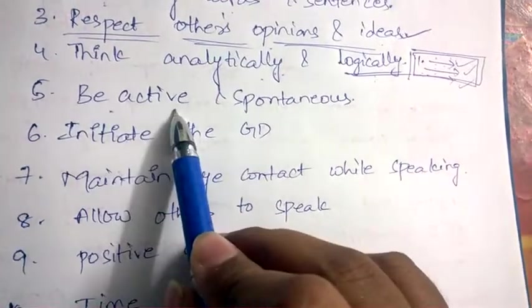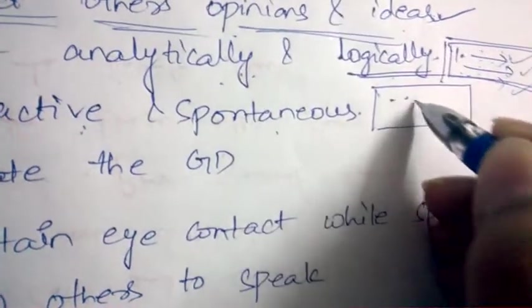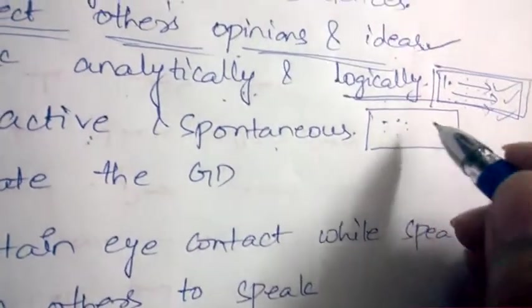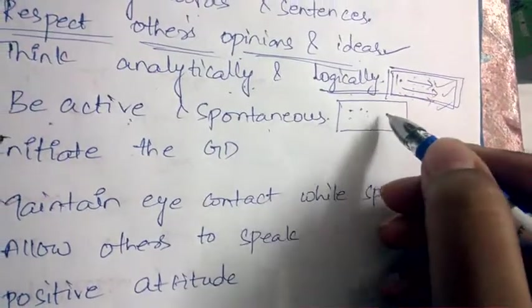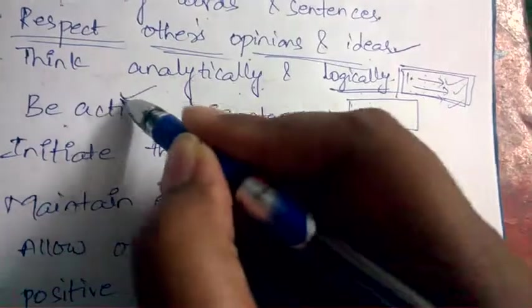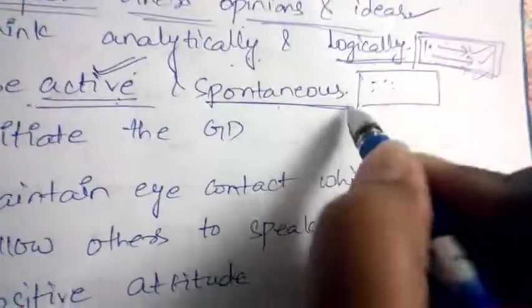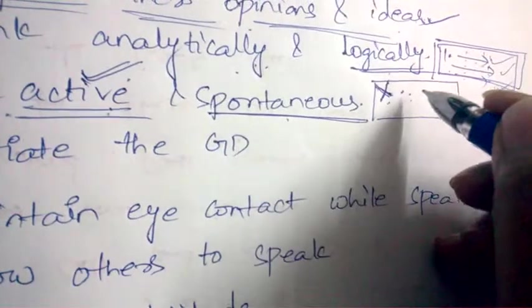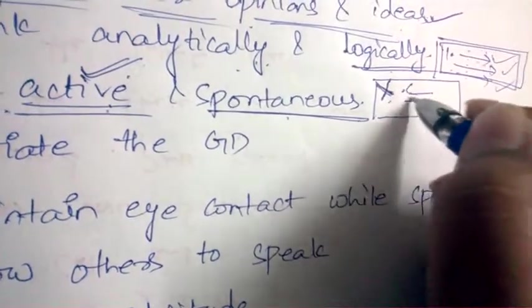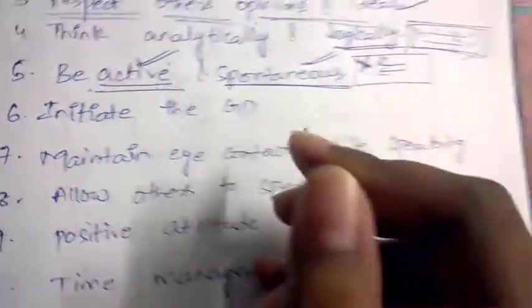Next: be active and spontaneous. In group discussion, there will be around five to six people sitting in a circular shape discussing a topic. Always be active, enthusiastic, and show interest in what others are saying. Spontaneous means if someone disagrees with your point, be ready to give examples supporting why you agreed on that point.